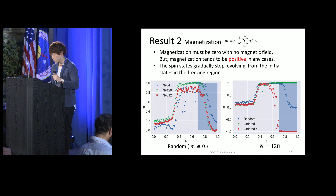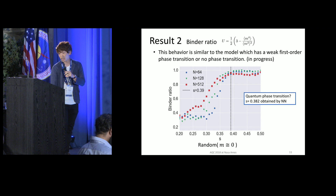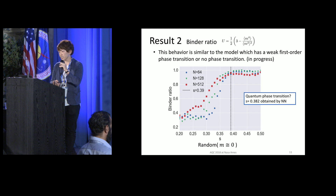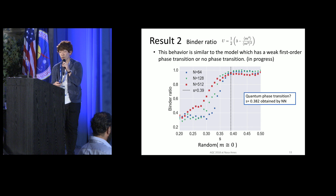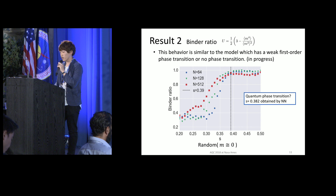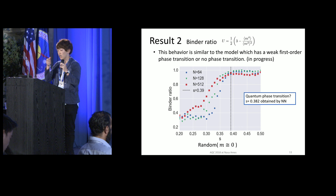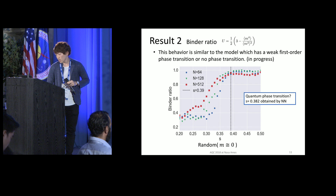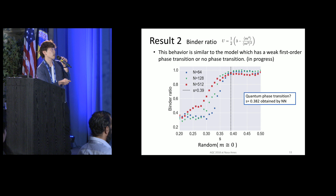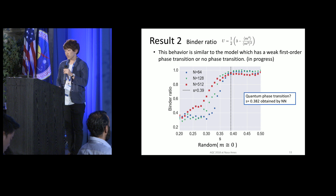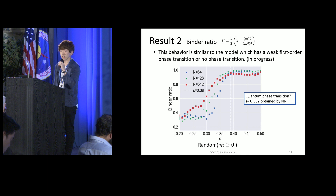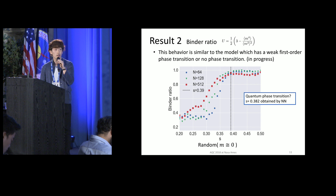The next result is the Binder ratio, where M is magnetization. To detect the place of the critical point, we calculate the Binder ratio. We can see that this parameter gradually decreases from this point. Strictly speaking, we can't regard this point as a critical point. But this result is a little consistent with the result of the neural network. Please remember this original model has a second-order phase transition. But this behavior is different from the original model — we can't see the cross point. This behavior is similar to a model which has a weak first-order phase transition or no phase transition. I wonder if this behavior is related to the positive bias, and we are investigating it. This result is a work in progress.